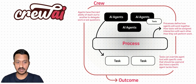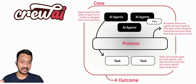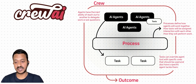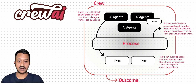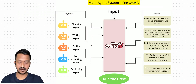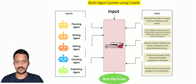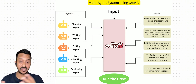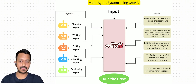We have a simple tutorial to show how you can build a multi-agent system using Crew AI. As you can see in the image, we have five agents working together to solve a complex problem.